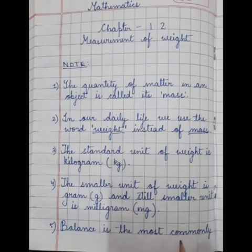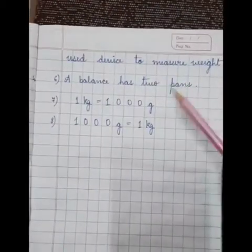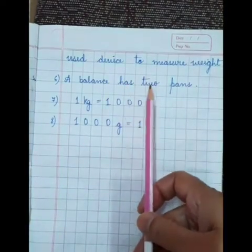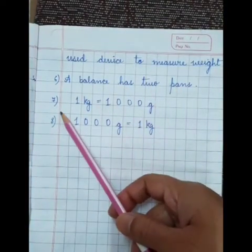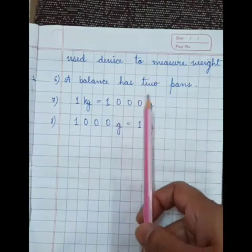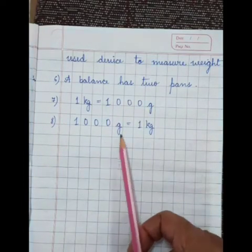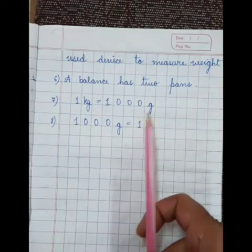Number 5: Balance is the most commonly used device to measure weight. Number 6: A balance has two pans. Number 7: 1 kg is equal to 1000 gram. Number 8: 1000 gram is equal to 1 kg.